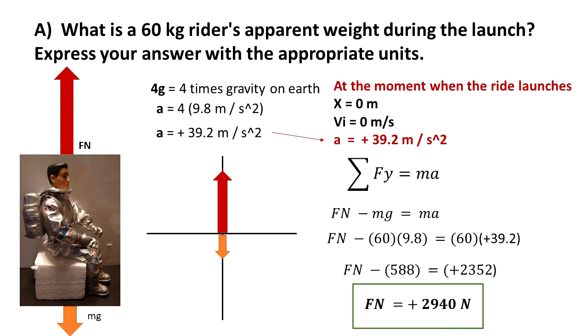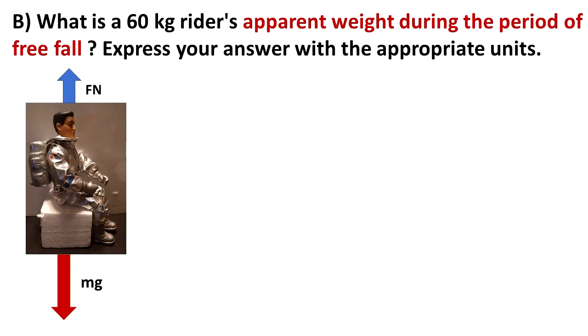This is the force that's pushing the man upwards, and this is also the apparent weight. Now let's do case B. What's the rider's apparent weight when it's in free fall?